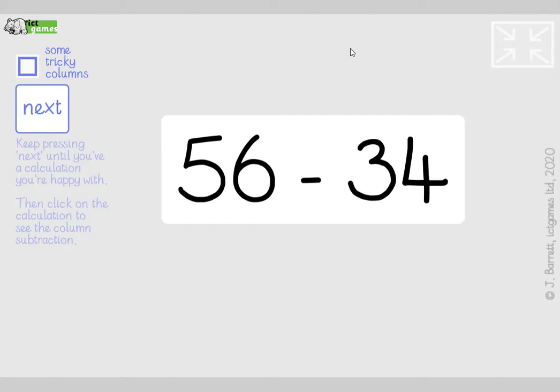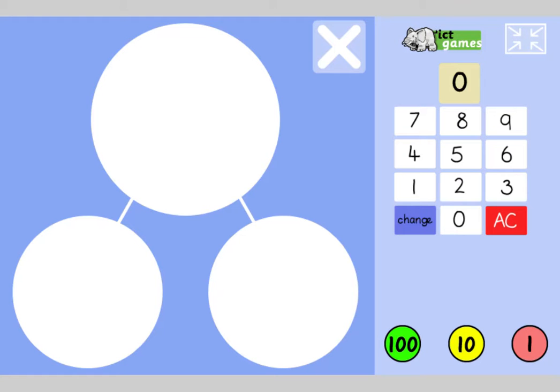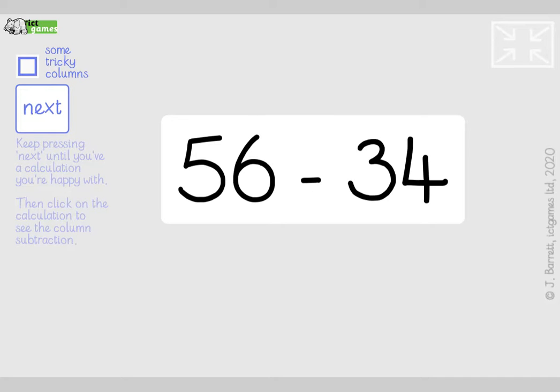Okay. So guys, we're looking at taking away and, same as last time, we're building on our skills of trying to learn how to write our takeaways as a column subtraction or vertical subtraction. And we're doing that by looking at how to do it in this game, how to do the vertical takeaway, but also looking at thinking of it as a part part whole. Okay. So we're going to do, first of all, can you write down 56 takeaway 34, but could you write it as a vertical?